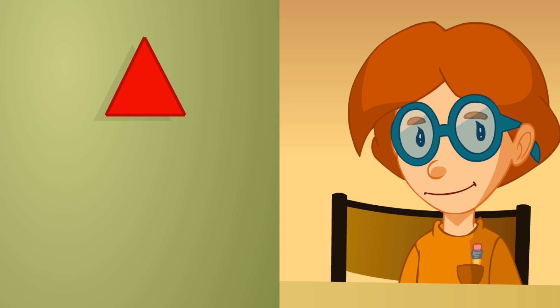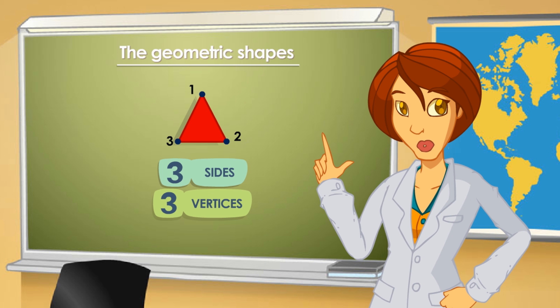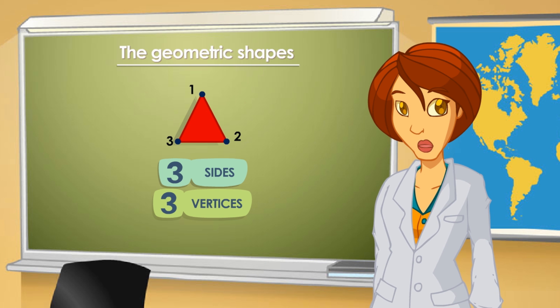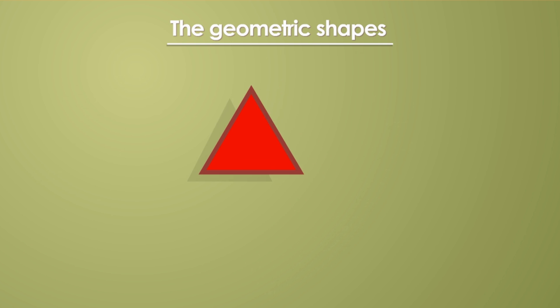Triangles have got three sides and three vertices. Right, Miss? That's right, Matt. That's the main feature of triangles. Their sides can be equal or different.